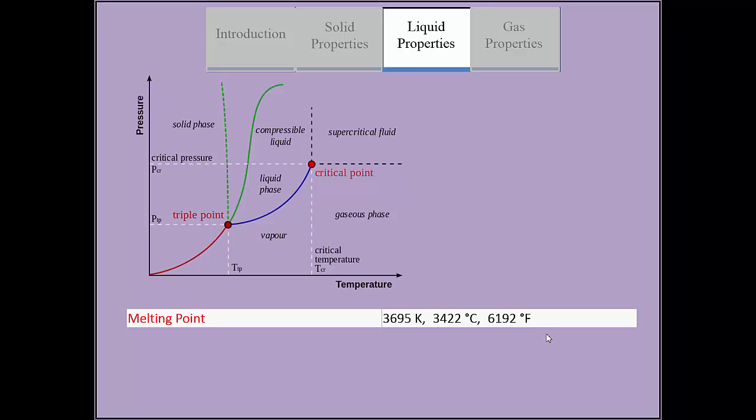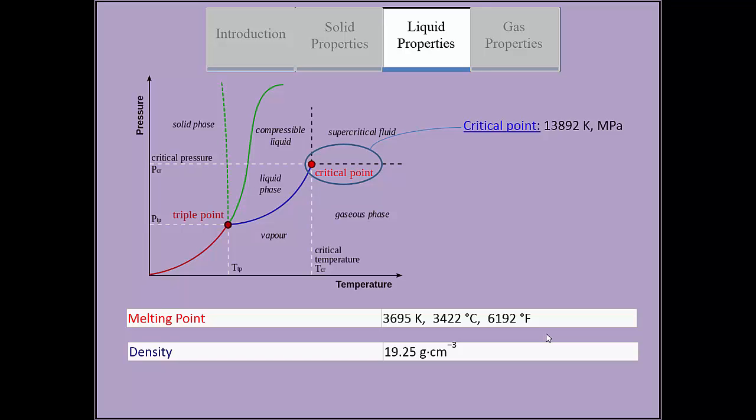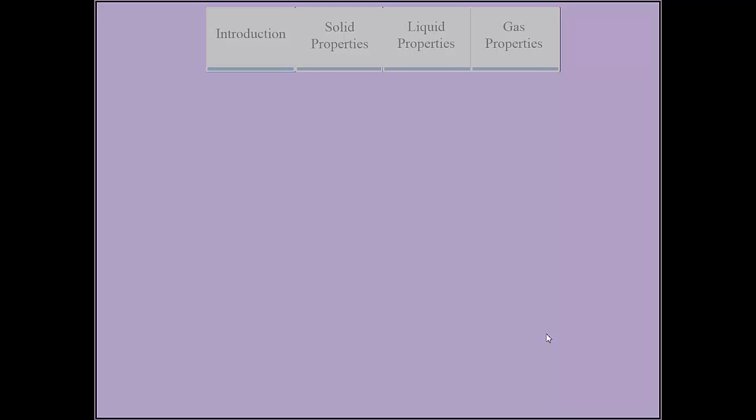Solid tungsten has a density of 19.25 grams per centimeter cubed. Tungsten also has a critical point of 13,892 kelvin at 1 megapascal. Because of the strong interatomic interactions, tungsten has a high boiling point of 6,203 kelvin.